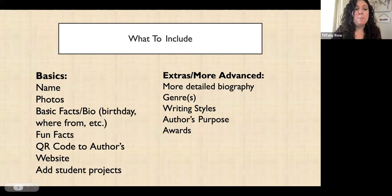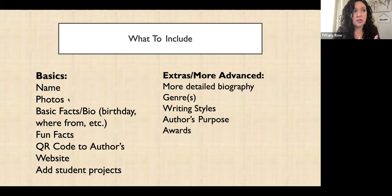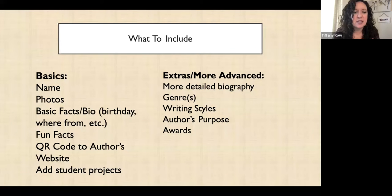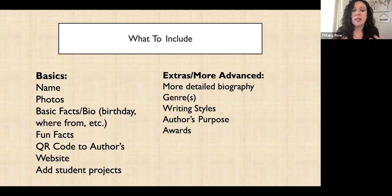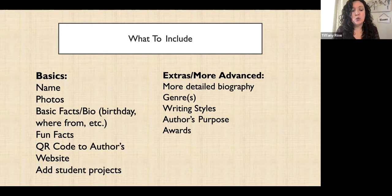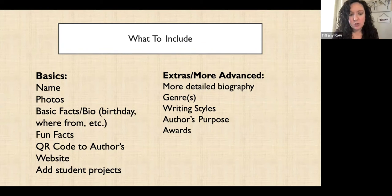So, what to include. The basics at pretty much any grade level would be their name, photos — I really like including not only a current photo but also a childhood photo of the author — basic facts and biography like their birthday, where they're from, where they live, and whether they have kids. Include fun facts and a QR code to the author's website, especially if your students have access to tablets. A lot of author websites have games and a whole student section that's really cool. Then if you do student projects related to the books, you can post those around the author's corner as well.